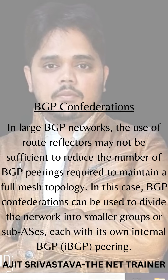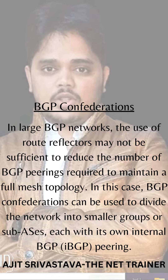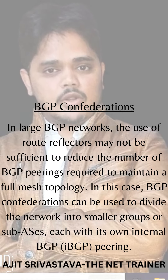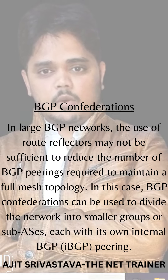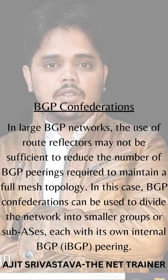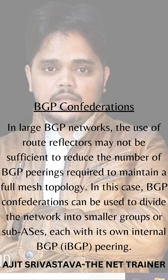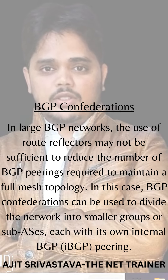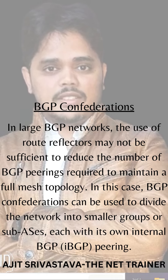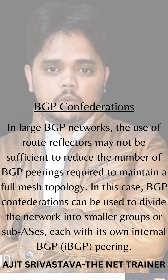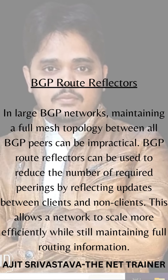BGP confederations: in large BGP networks, the use of route reflectors may not be sufficient to reduce the number of BGP peerings required to maintain a full mesh topology. In this case, BGP confederations can be used to divide the network into smaller groups or sub-ASes, each with its own internal BGP.